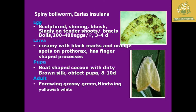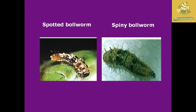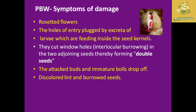The spiny boll worm is Earias insulana. For identification: the egg is a sculptured, bluish one found singly on tender shoots; a single female can lay around 200 to 400 eggs in its lifetime. The larva is creamy with black margins, orange spots on the prothorax, and has finger-shaped processes. The pupa forms a boat-shaped cocoon with dirty-brown silk, lasting 8 to 10 days. The adult has four wings and is grassy green in color with yellowish-white hindwings.